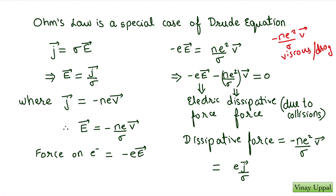This force equation simply states that the electric force and the dissipative force sum to zero, implying the electron drift velocity is constant with respect to time. The dissipative force, −(ne²/σ)v, can be written in terms of current density as (e/σ)j, which is in the same direction as j and opposite to electron velocity — confirming it opposes electron motion.